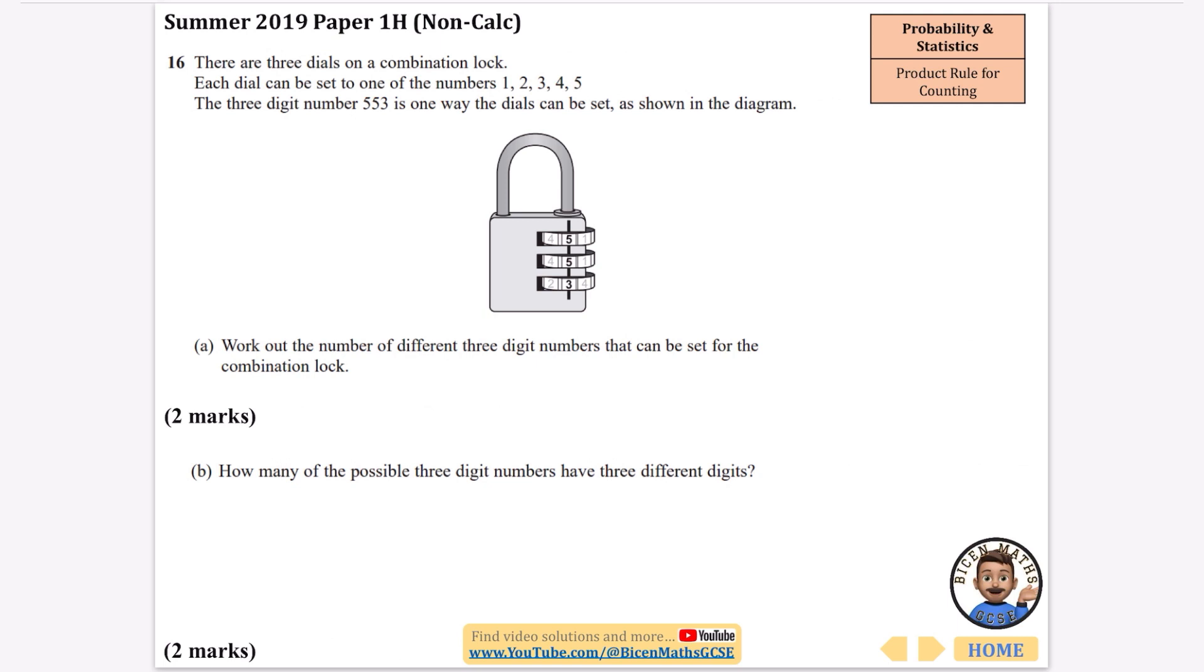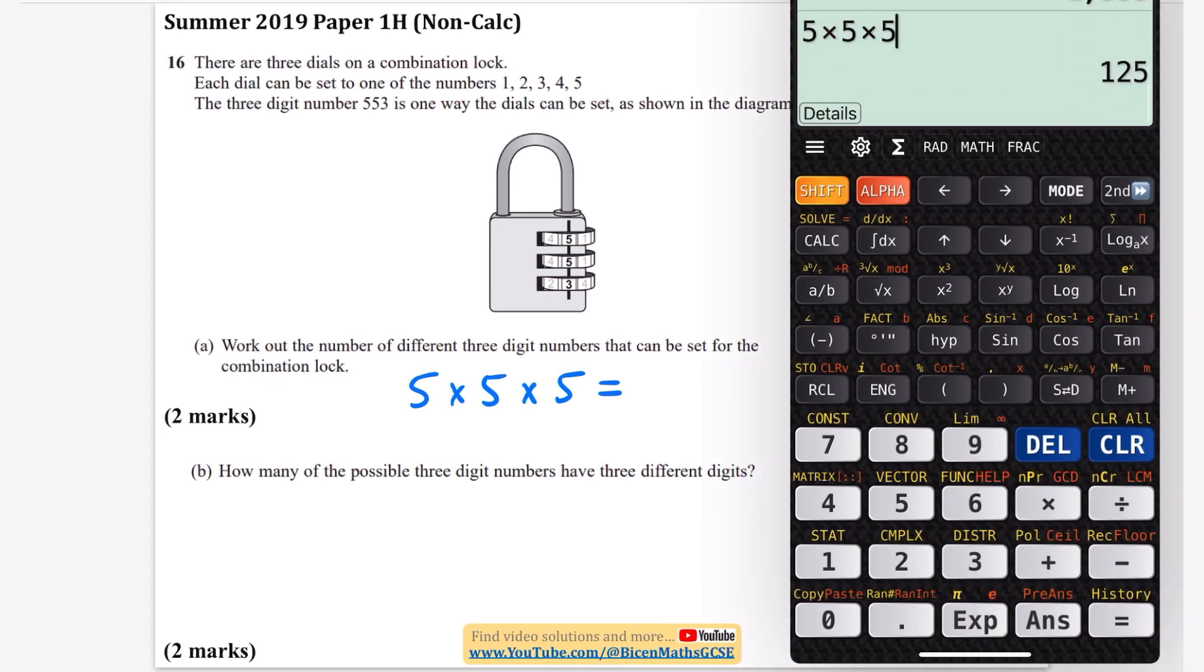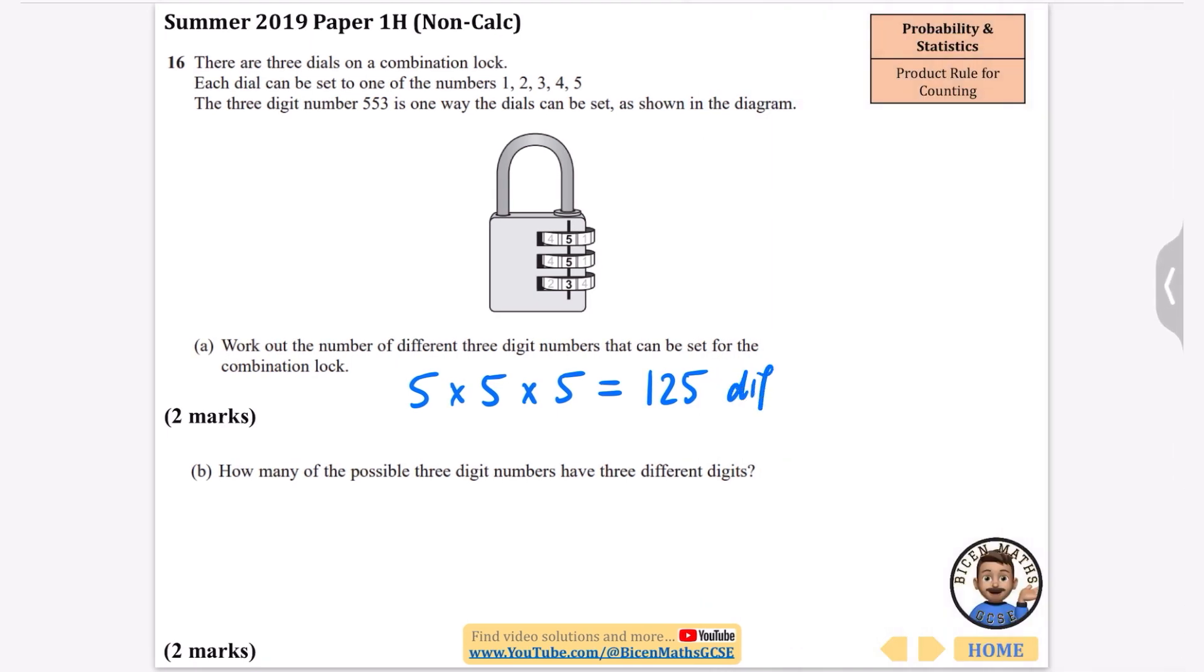We've got this one about three dials on a combination lock. As soon as you see something to do with combinations it makes us think of this topic. Each dial can be set to one of the numbers 1, 2, 3, 4 and 5, so we have five options. The three digit number 553 is one way that the dials can be set. Work out the number of different three digit numbers that can be set. Well, for the first digit you have five choices, for the second digit five choices, and for the third digit five choices. We just multiply them together and we get 125 different three digit numbers.